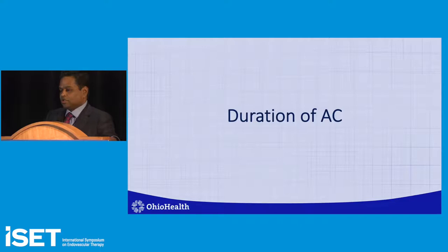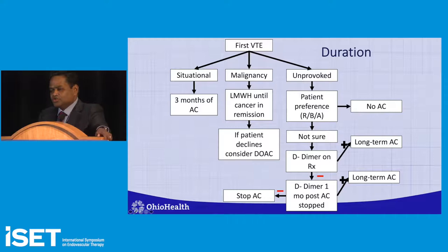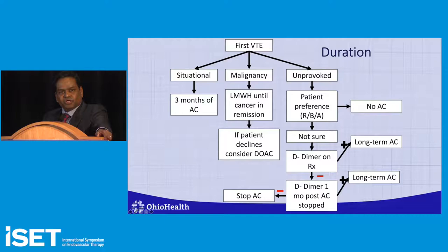Regarding duration of anticoagulation: if it's the first DVT and situational, treat for three months only. If malignancy is present, start with low molecular weight heparin and continue until the cancer is deemed cured; if the patient refuses LMWH, use DOAC over warfarin. If unprovoked, you need a detailed patient discussion — these consults typically take 40 to 45 minutes.